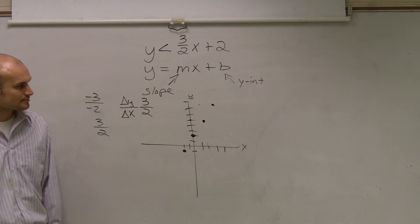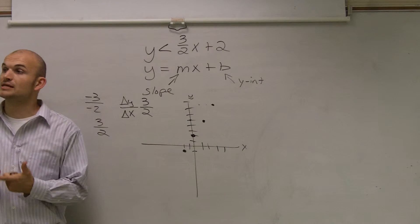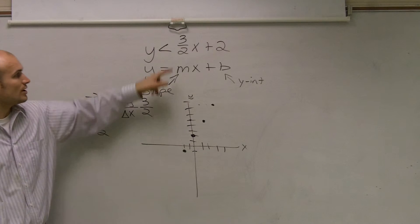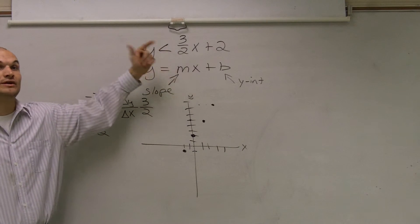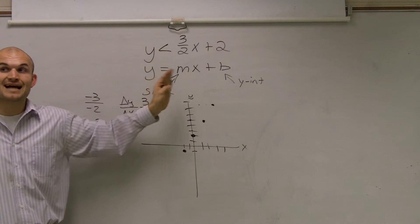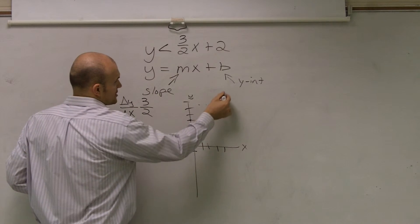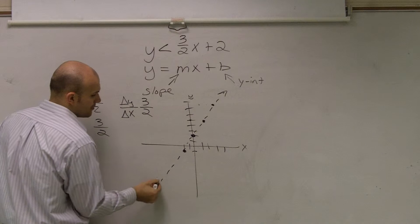Now, the next thing we need to do is determine, is it a dashed or a solid line? So is our line going to be a part of our solution? Well, since it's less than and not less than or equal to, our line is not equal to our solution. So therefore, it's going to be a dashed line. Our line is not a part of our solution.